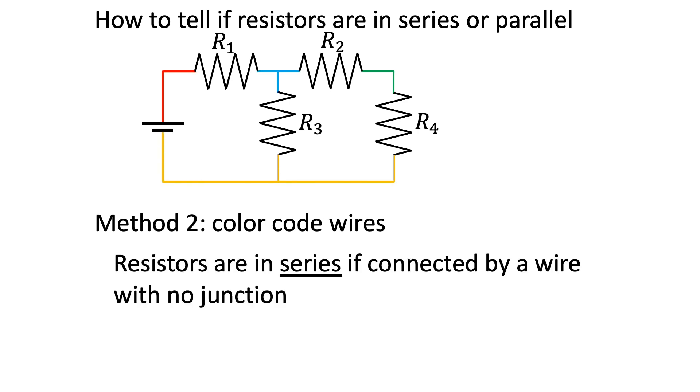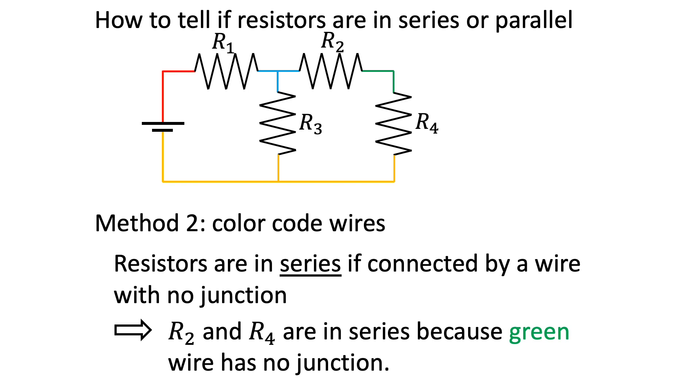As we discussed earlier, resistors are in series if they are connected by a wire with no junction. In this case, R2 and R4 are connected by the green wire, which has no junction, so they must be in series.